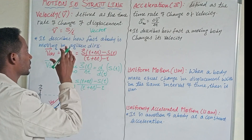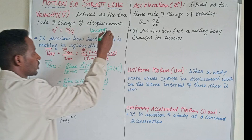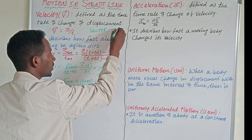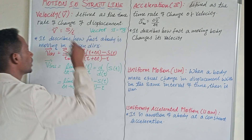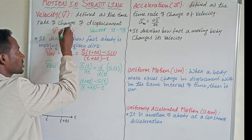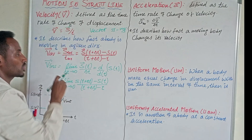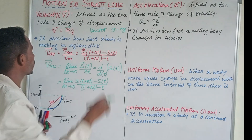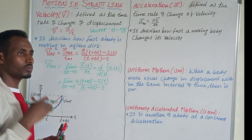Velocity can be 1 meter per second, just like the previous example. The SI unit is 1 meter per second, and it can be expressed as displacement over time. Displacement is the same as the displacement over time.